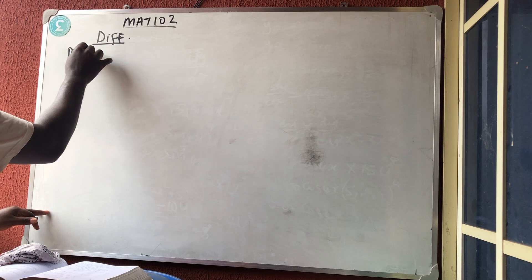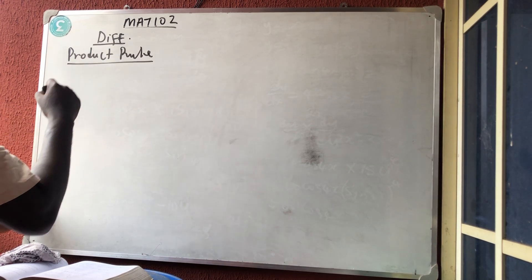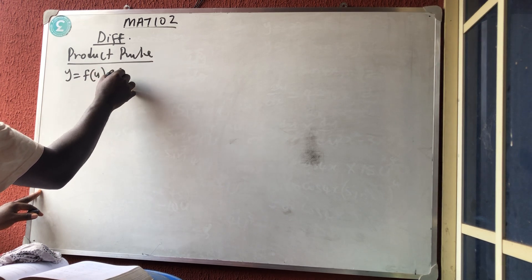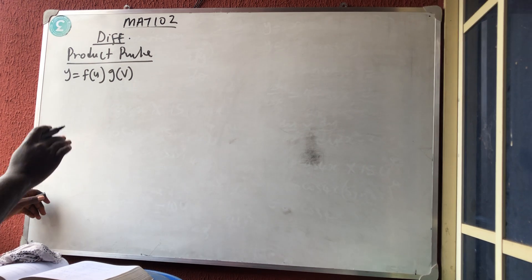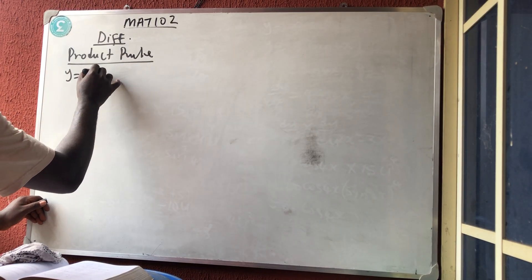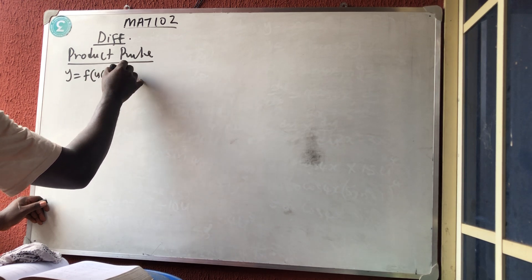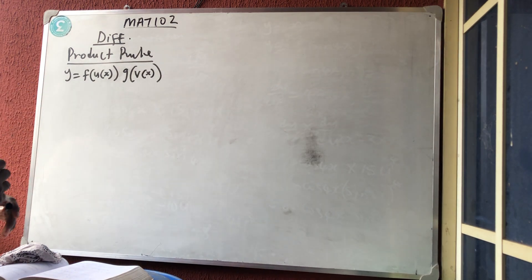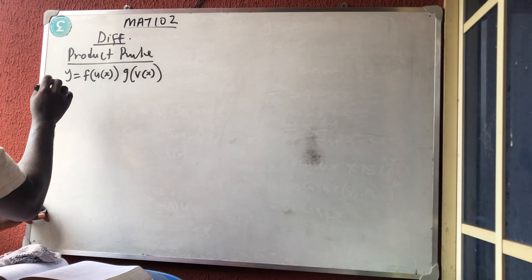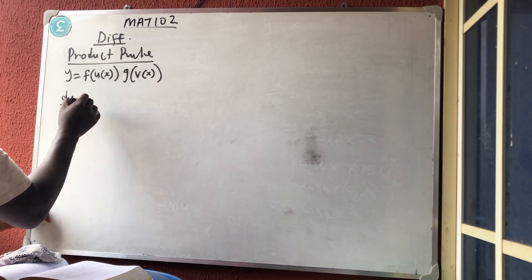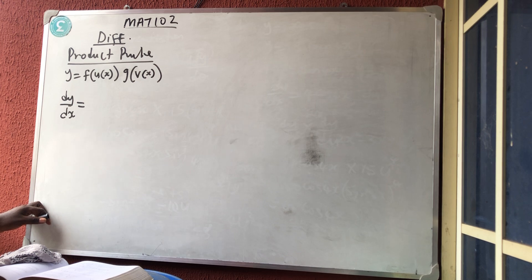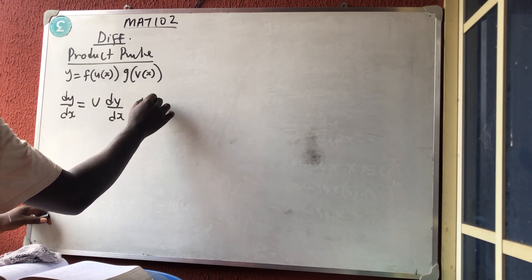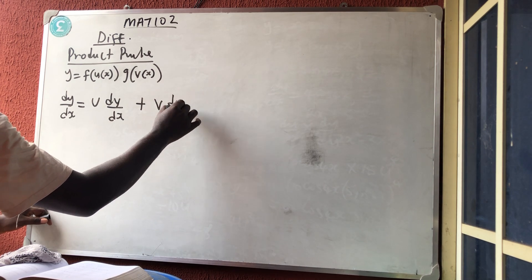The next rule we're going to talk about is the product rule. The product rule states that if y is a function of u and equally a function of v, and these two things are still functions of x — don't forget they are still functions of x — then dy/dx is: leave the first one u, differentiate the second one to have dv/dx, plus leave the second one v, differentiate the first one.